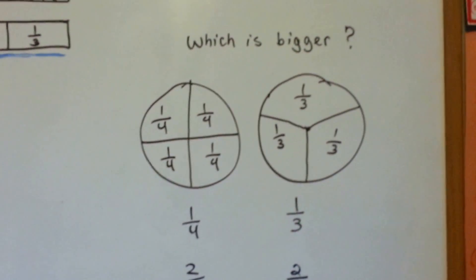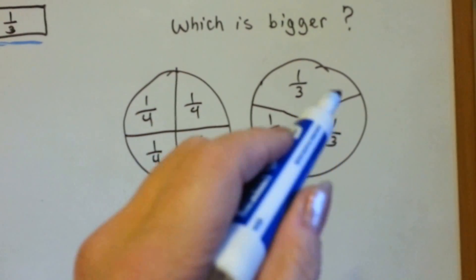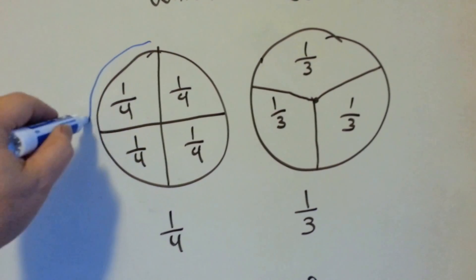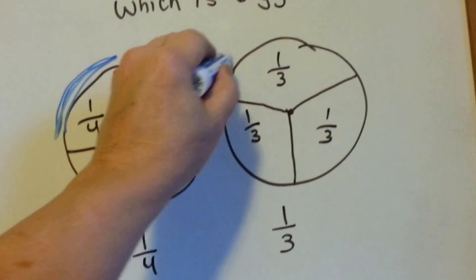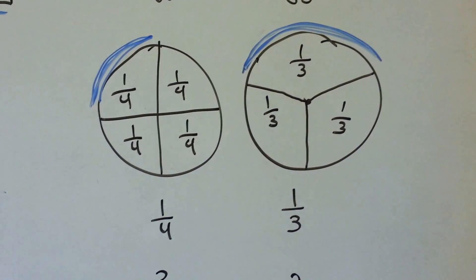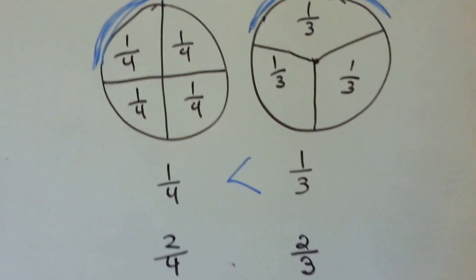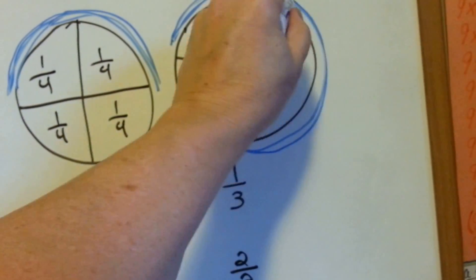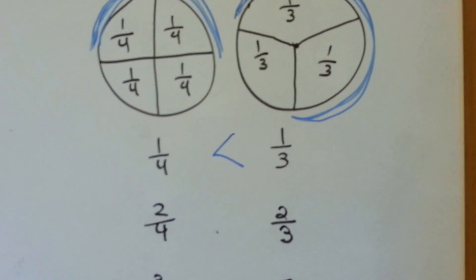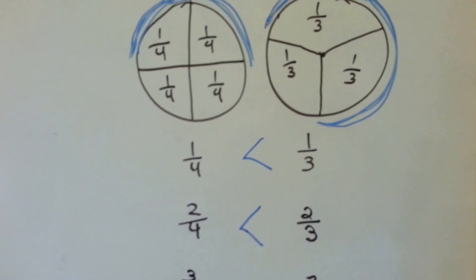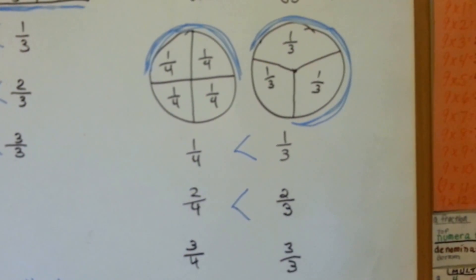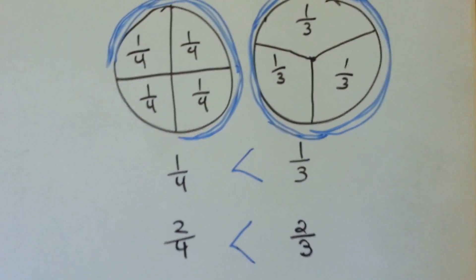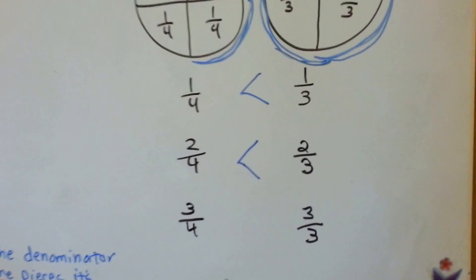Let's try it again. Which is bigger? This is split into fourths. This is split into thirds — 4 parts versus 3 parts. 1 fourth or 1 third? Here's 1 fourth. Here's 1 third. The 1 third is much bigger. How about 2 fourths and 2 thirds? Here's 2 fourths, and here's 2 thirds. 2 thirds is much bigger. 2 fourths is less than 2 thirds. Now which is bigger — 3 fourths or 3 thirds? Let's do 3 fourths — that brings us to here. And 3 thirds would bring us all the way around the whole thing. So 3 thirds is bigger than 3 fourths.